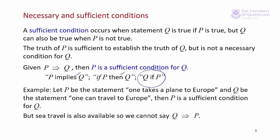One more example. If we have P as the statement one takes a plane to Europe, and Q is the statement one can travel to Europe, then P is a sufficient condition for Q. But sea travel is also available, so we cannot say Q implies P.